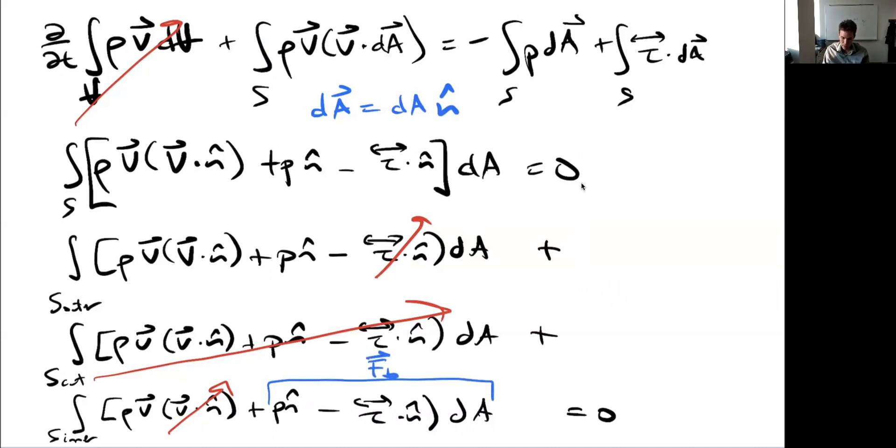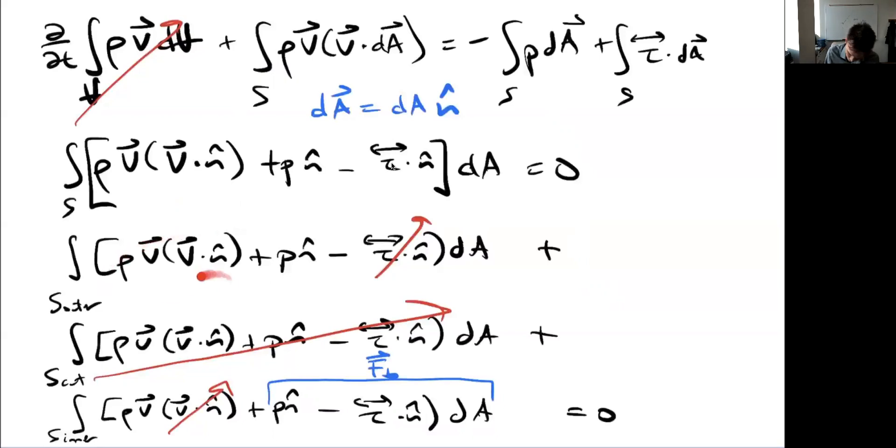Notice that everything canceled out and all we're left with is this stuff here and potentially not even that. So we can write that out now. I have to move this stuff to the other side of the equation, so there's a negative sign. So I get that my body force is negative integral over some outer control volume of ρV times V dot n̂ and potentially plus the pressure term again. That one goes away for many cases when it's unconfined. And that's it.